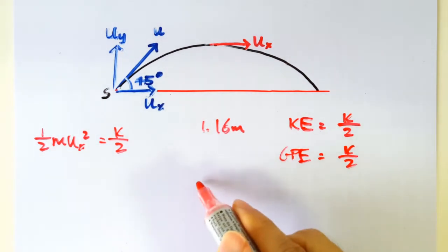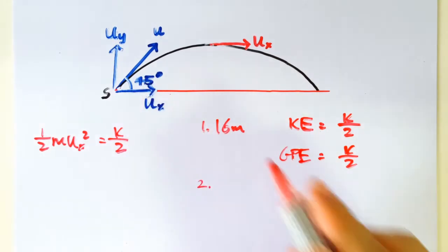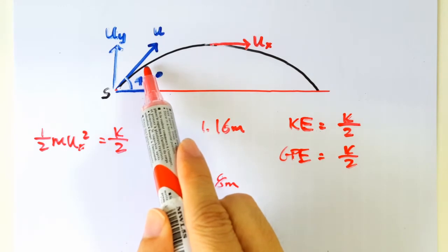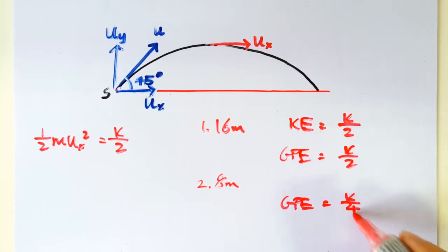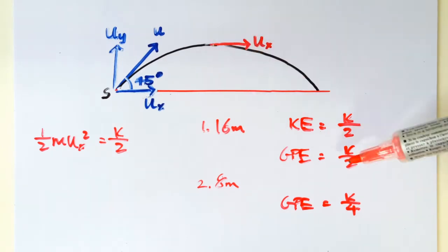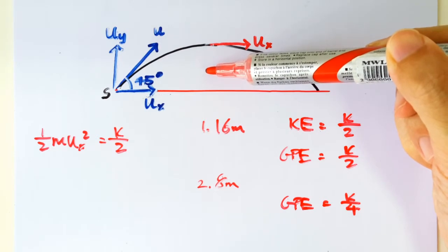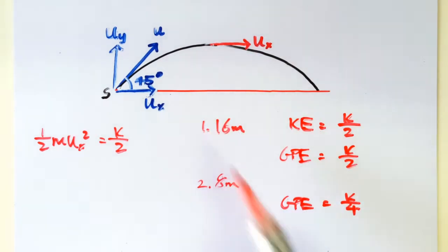Let's move on to the second part. That's when the projectile is at the height of 8 meters. So when it's at the height of 8 meters, its GPE should be half of K over 2, which is K over 4. How do we know that? Because when it's at the height of 16 meters, its GPE is K over 2. So if you are at the height of only 8 meters, you should have only half the GPE.